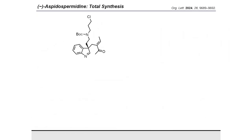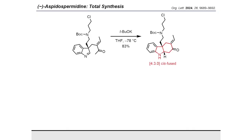With the key allylic substitution reaction successfully performed, we turned our attention to the next steps in synthesis. Under basic conditions, the indolinine was cyclized in a Mannich reaction to afford the cis-fused tricycle as a single diastereomer. Upon construction of the C-ring, a 6-5-6 fused system was formed, for which cis-stereochemistry is more stable.